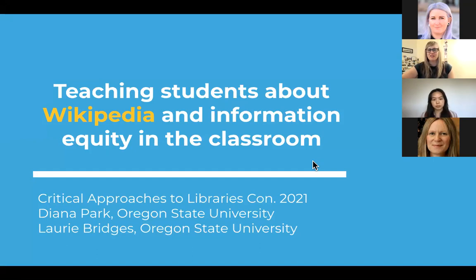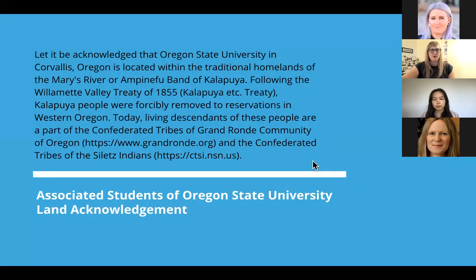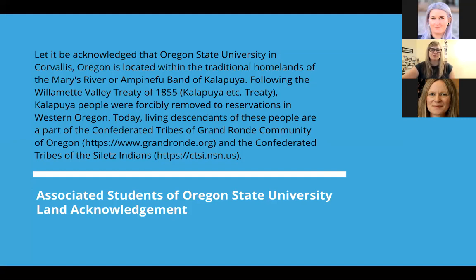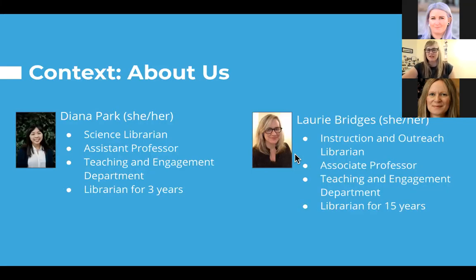Diana and I are here today to talk about teaching with Wikipedia in the classroom. Before we launch into that, we do want to read the land acknowledgement statement for our university. Let it be acknowledged that Oregon State University in Corvallis, Oregon, is located within the traditional homelands of the Marys River or Ampinefu Band of Kalapuya. Following the Willamette Valley Treaty of 1855, Kalapuya people were forcibly removed to reservations in western Oregon. Today, living descendants of these people are a part of the Confederated Tribes of Grand Ronde community of Oregon and the Confederated Tribes of the Siletz Indians. Today, we are talking about Wikipedia, but this is our first UK conference. We thought maybe we should give some context about us and then about our particular university and our setting.